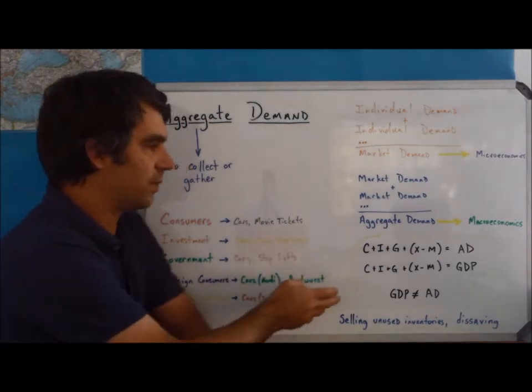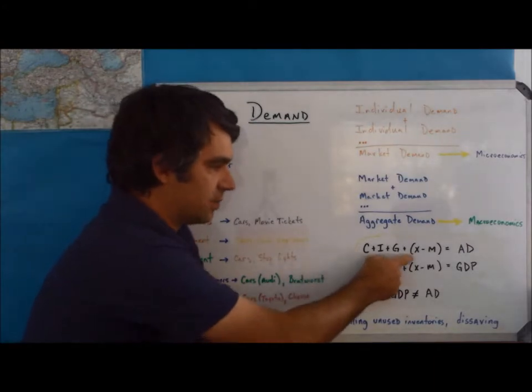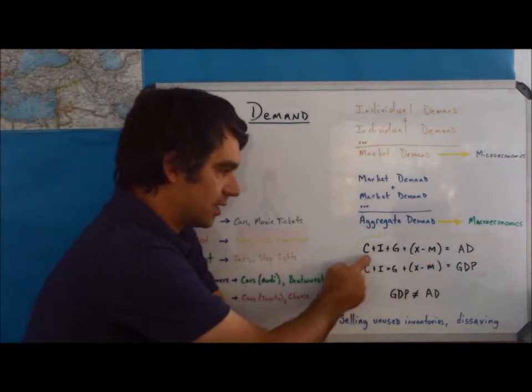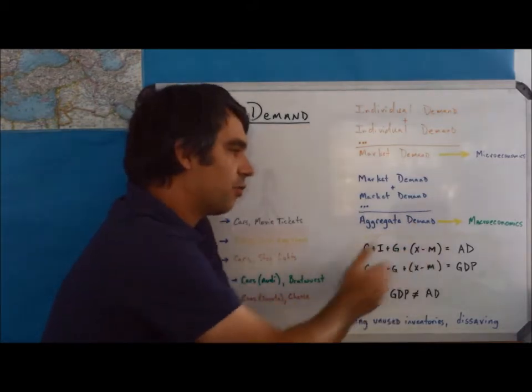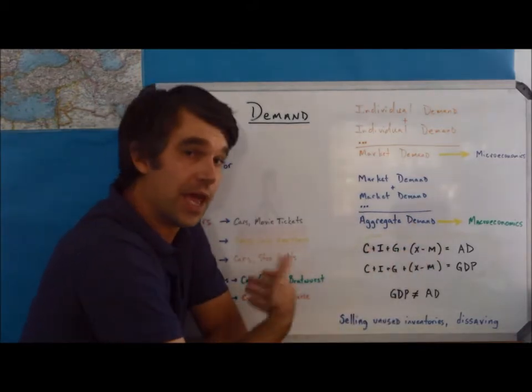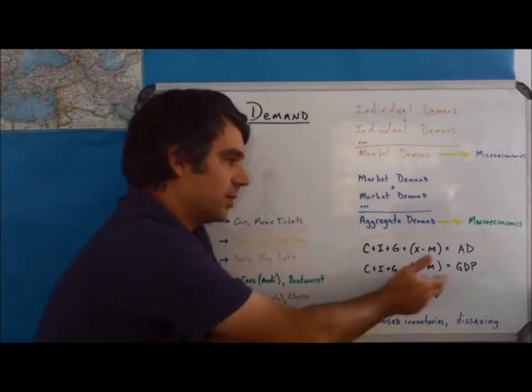Now, when we write it as a formula, we write it as C + I + G + X - M. So consumption plus investment, government spending, exports minus imports. That's our formula for aggregate demand. And you'll remember that that's also the formula for GDP.